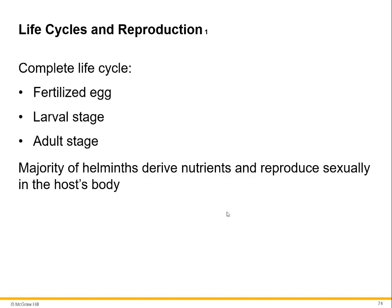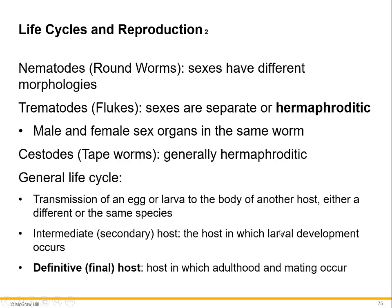The life cycles include an egg, a larval stage, and an adult. The egg is usually how we get them, and then they become a larval stage. Sometimes the larval stage is what actually invades us, coming through the water, and then they develop into the adult stage within the host. The majority of helminths get their nutrients and reproduce sexually inside the host's body.